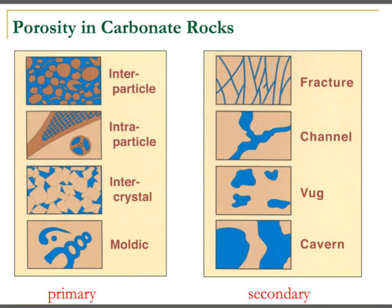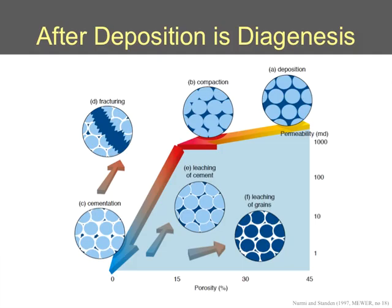Let's talk a little about pores. Because carbonate rocks are soluble, there are many possibilities for pore space. Most pore types are self-explanatory. Moldic porosity refers to an original fragment — usually a shell — that was deposited and then dissolved away during diagenesis, leaving a mold of the fossil. Porosity is divided into primary porosity, which forms early, and secondary porosity caused by diagenetic changes due to later fluid flow through the limestone, up to vugs and caverns.